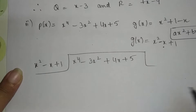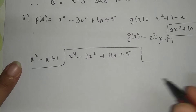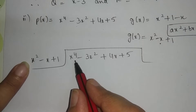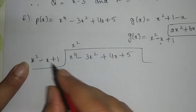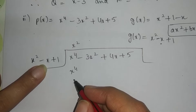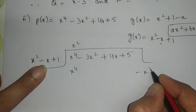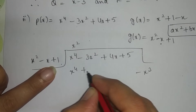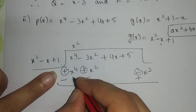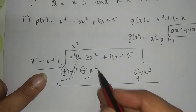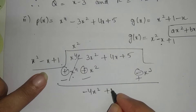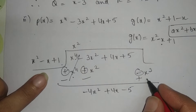If you solve along with me in your notebook, you will understand much more quickly. See — x raised to power 2 multiplied by what gives x raised to power 4? By x raised to power 2, because 2 plus 2 equals 4. So x raised to power 4 comes. Now minus x multiplied by x squared gives minus x cubed. Since x cubed is not in the dividend, we write it separately. 1 into x squared becomes plus x squared. Next step: sign change. One plus and one minus cancel, giving 0. Minus 3 and minus 1 gives minus 4x squared plus 4x minus 5, and the x cubed term is brought forward.